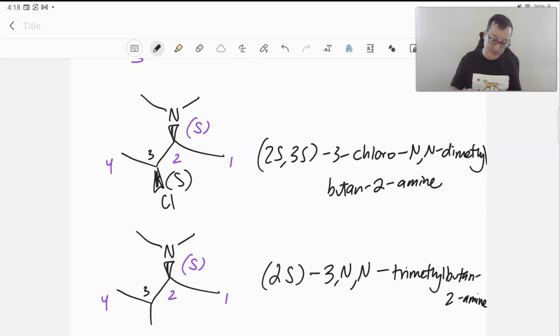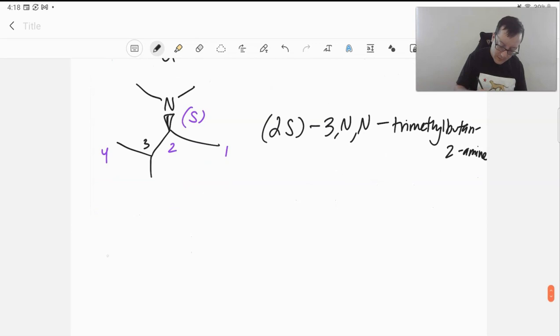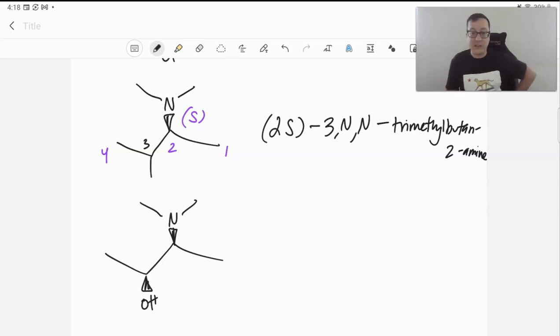And so, if it's a substituent, we'll do our last case here. If we have the following, just changing that to a hydroxy. Our priority now becomes the alcohol. Right? Because alcohols have higher priority. So, we saw that both of these are going to be S stereocenters. 2S3S. Our parent name is going to be butan-2-ol now.